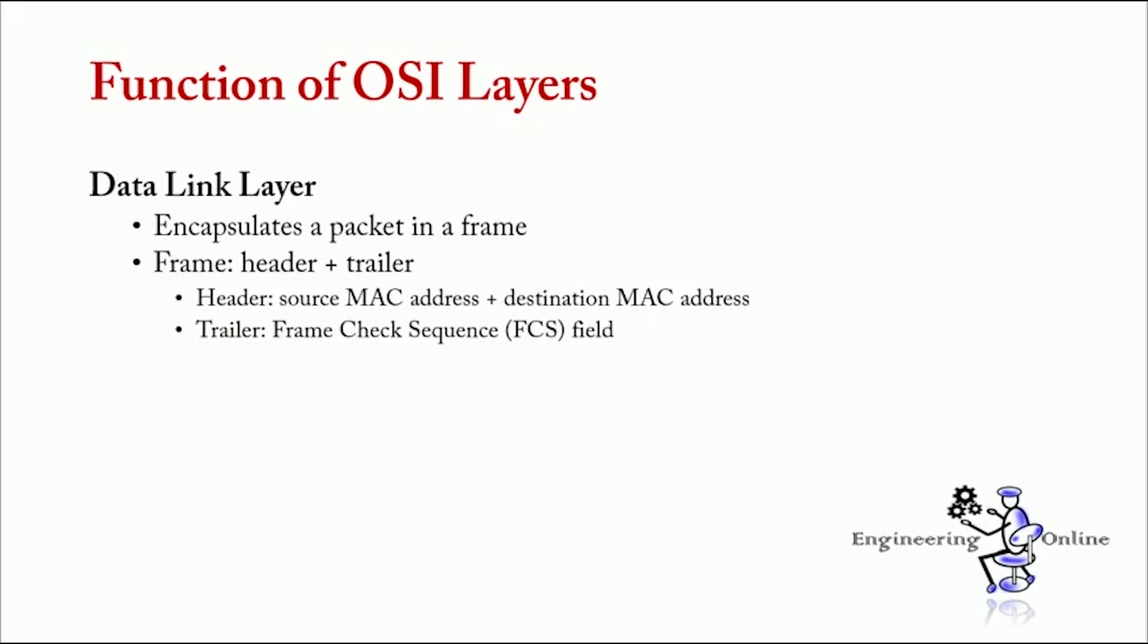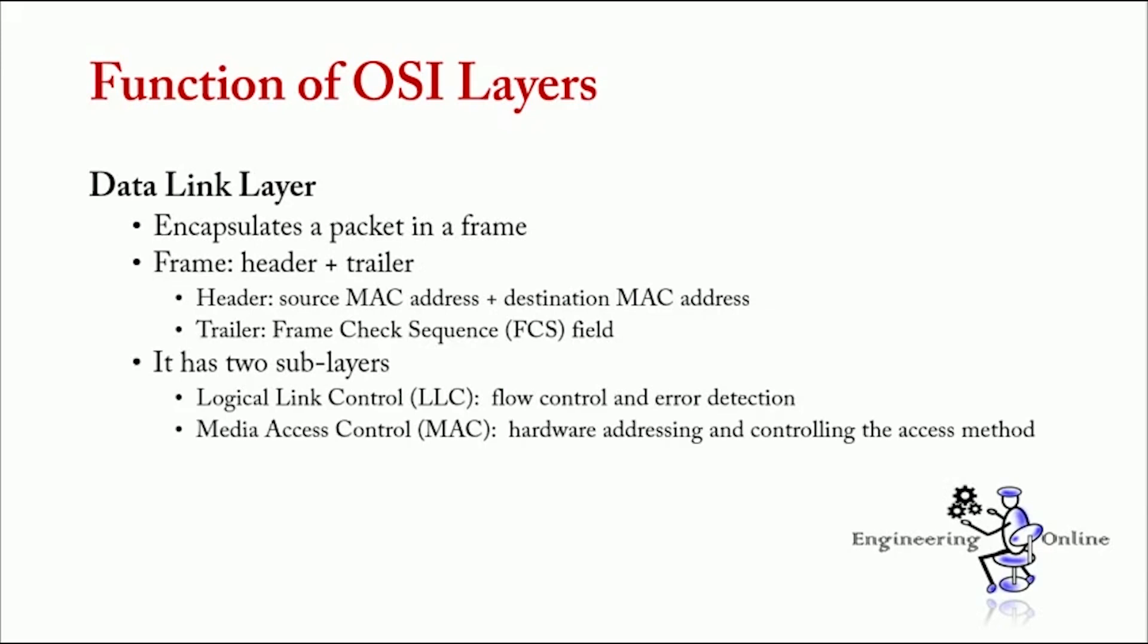This layer is divided into two sub-layers. First one is LLC logical link control. It is used for flow control and error detection. Second one is MAC, that is media access control. It is used for hardware addressing and for controlling the access method.